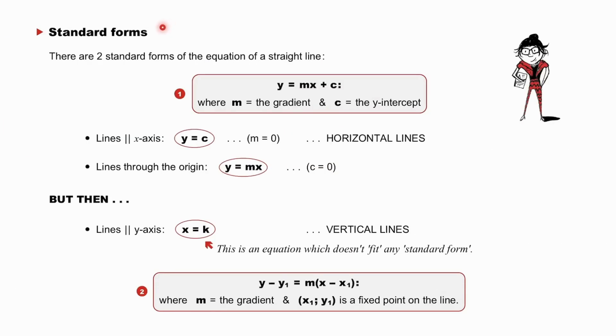So, what are standard forms? Well, there are two standard forms of the equation of a straight line. Classically, y equals mx plus c, where m is the gradient, and c is the y-intercept, and y minus y1 equal to m, x minus x1, where m is the gradient, and x1, y1 is a fixed point on the line.